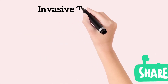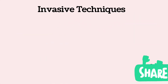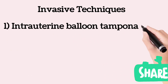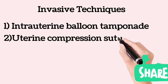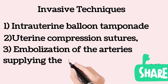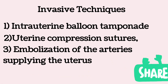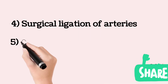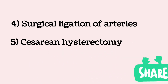If hemorrhage and atony persist despite aggressive administration of multiple classes of uterotonic agents, invasive techniques must be considered. These include intrauterine balloon tamponade, uterine compression sutures, embolization of the arteries supplying the uterus, surgical ligation of the arteries, and caesarean hysterectomy.